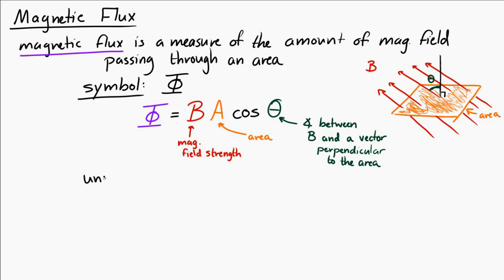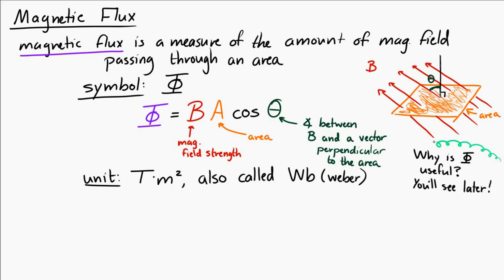The unit of magnetic flux is the Tesla meter squared. It's also called a Weber, WB. Now you might be asking, well, that seems a little bit odd. Why are we defining this magnetic flux thing? Why is it important? I promise you we will see it in part two.